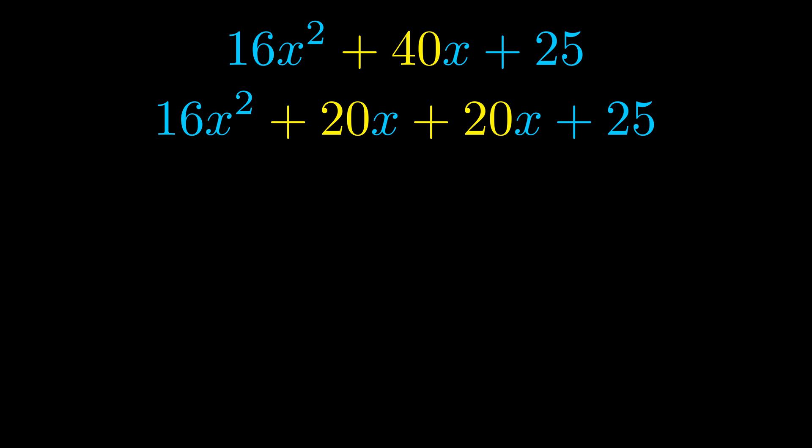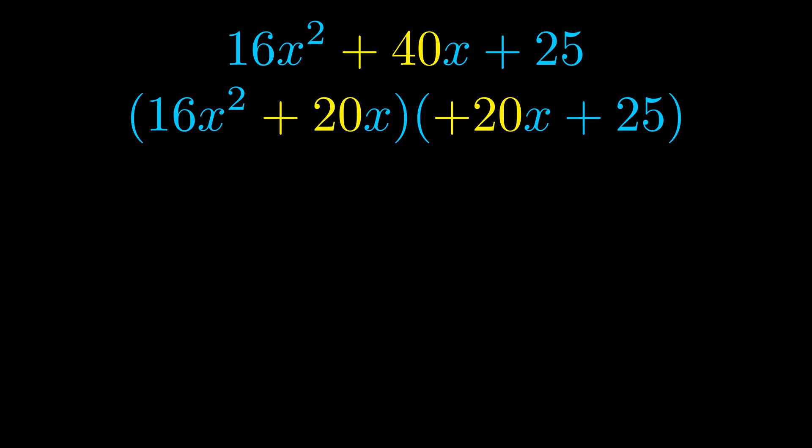Once we've done this we go ahead and we put parentheses around the first term and the last term. And we do that so that we can take the greatest common factor out of both terms. We can see the greatest common factor is now outside in green.